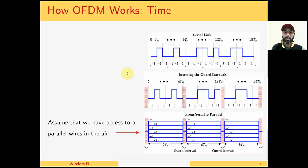As an intermediate step, assume that we divide these serial symbols into blocks of 6, where 6 is just for an example, and we insert the guard interval in between. We will cover this guard interval later and you can safely ignore it here. The most important point is that suppose we have access to a set of parallel wires in the air equal to the number of symbols in one block. For example, for a block of 6 symbols, we have a set of 6 parallel wires in the air.